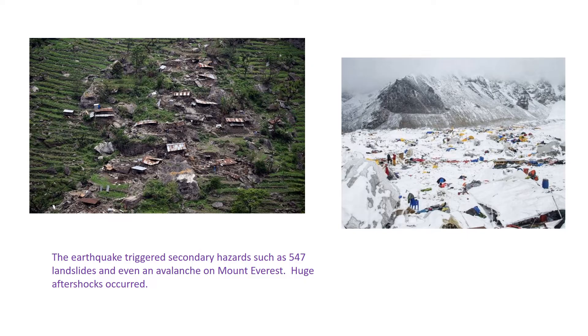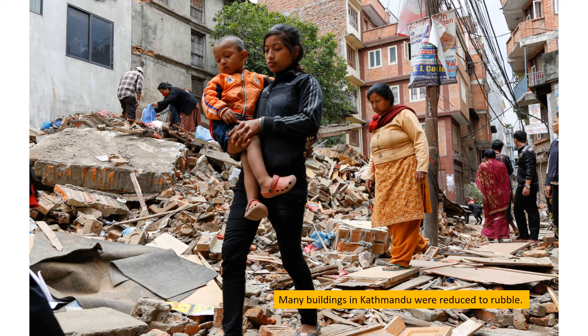The earthquake triggered several secondary hazards. There were 547 landslides, and an avalanche was also triggered on Mount Everest. These landslides wiped out several villages, and the main base camp on Everest was completely destroyed. This image here captures the scene in Kathmandu where buildings have in some places been completely reduced to rubble, with people picking through looking for survivors.